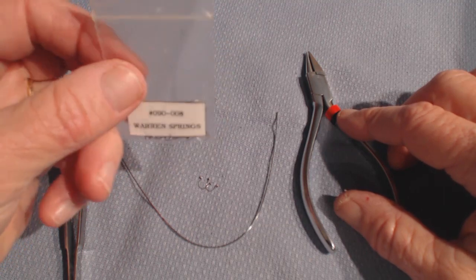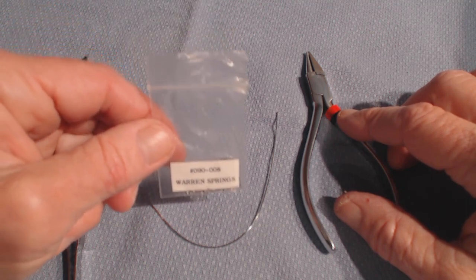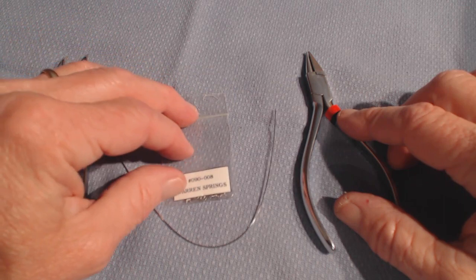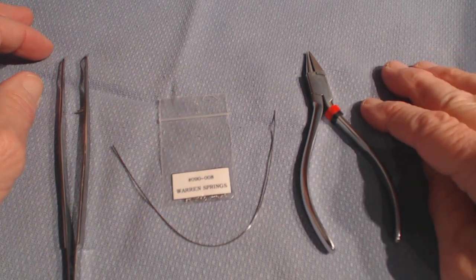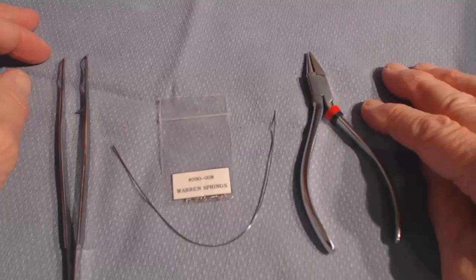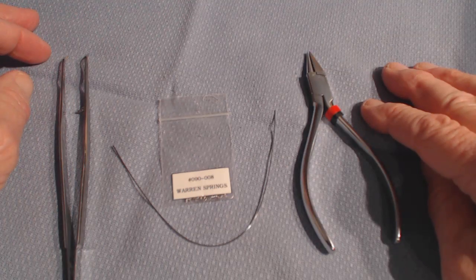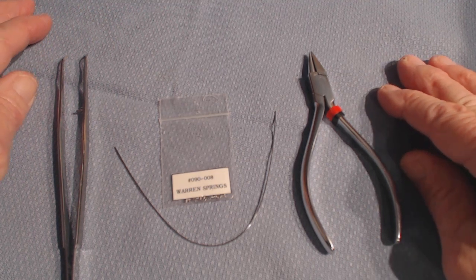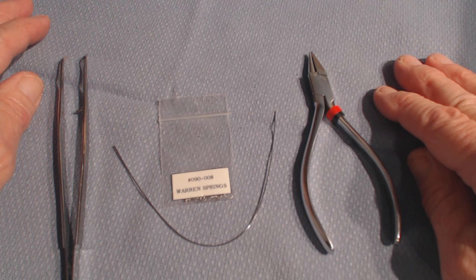And since the advent of the IP bracket, that happened in 2003 with the high torque brackets, the Warrant Springs aren't used very often anymore, but occasionally you're going to get a case where there's just one tooth that severely has a torque problem, and a Warrant Spring is an excellent solution for that. So it's used very infrequently, but when it's needed, it's really a nice thing to use.